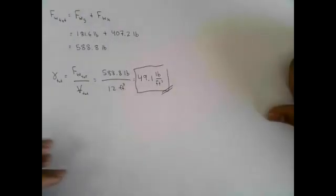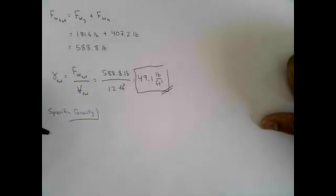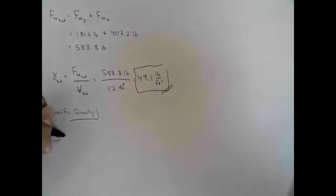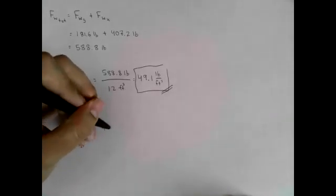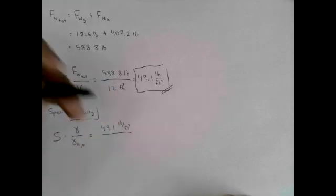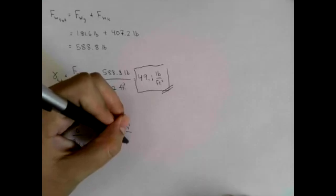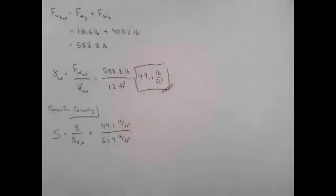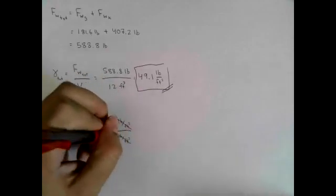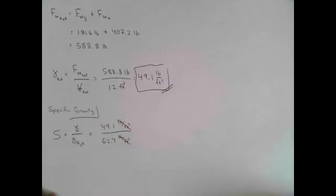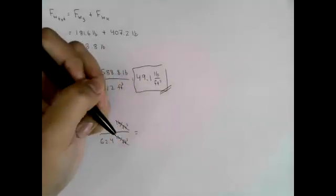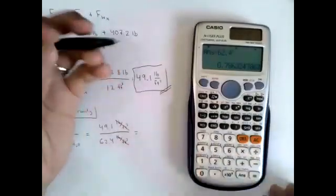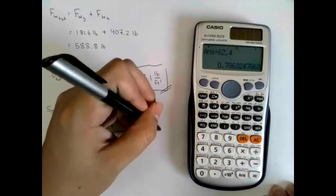The second part asks for specific gravity, which is easier. Specific gravity equals the ratio of the specific weight of the fluid over the specific weight of water under standard engineering conditions. That's 49.1 lb/ft³ divided by 62.4 lb/ft³ — a number you'll memorize from using it so often — which gives a specific gravity of 0.786.